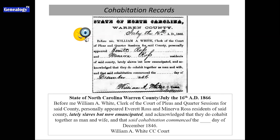Another type of record very valuable to slave ancestral research are cohabitation records. This is an example from Warren County, North Carolina — it's easy to read because it's a pre-typed document where names just have to be filled in. The snippet from the 1870 census I showed of my third great-grandparents, Everett and Minerva Ross, this is their cohabitation record. Whereas I started off suspecting they had been enslaved because I never saw them before 1870, further research led me to this document, which confirmed they were enslaved — where it tells me they were 'lately slaves, but now emancipated.'